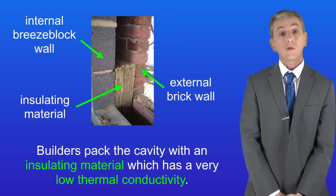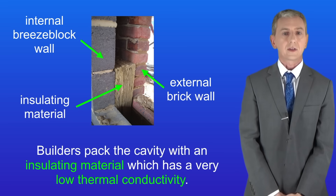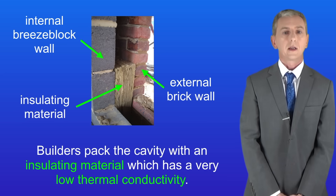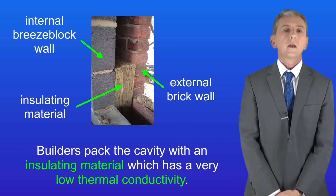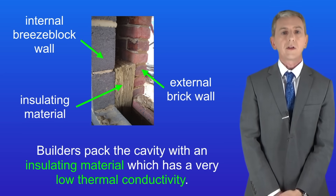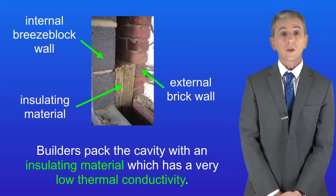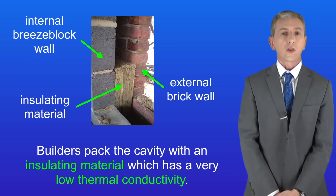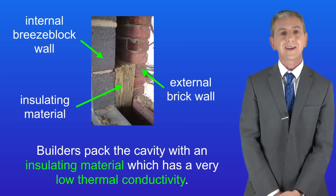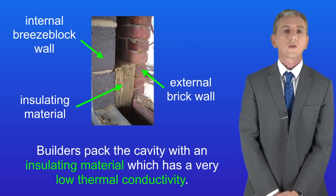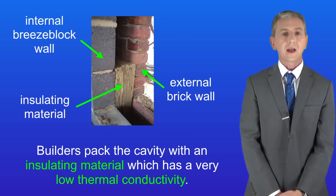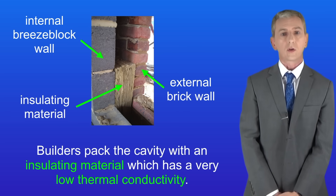So to correct that, builders pack the cavity with an insulating material. This insulating material has got a very low thermal conductivity, which reduces the overall thermal conductivity of the wall by up to 10 times. So much less thermal energy passes through the walls and escapes from the house.